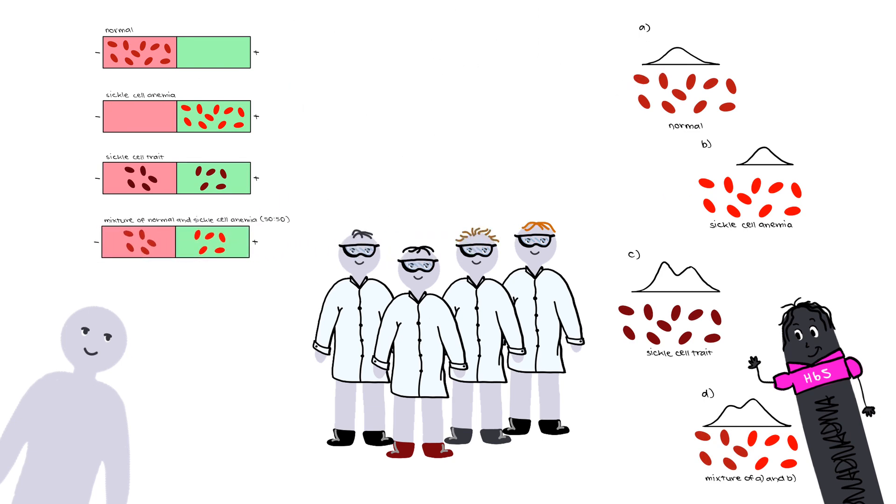Basically, they demonstrated that people with sickle cell anemia have different hemoglobin to people with normal cells, and people with the sickle cell trait have an intermediate phenotype, with components from both sickle cell anemia hemoglobin and normal hemoglobin.